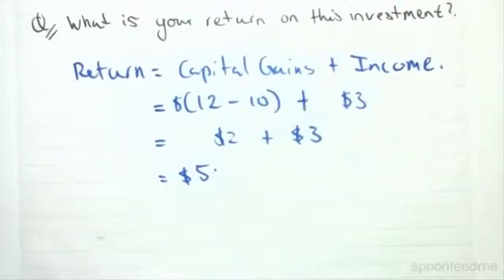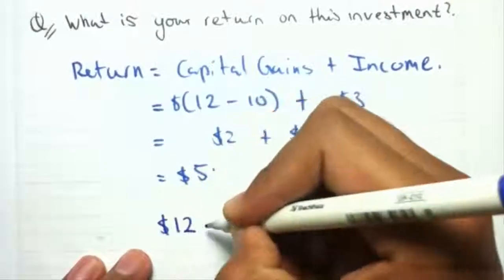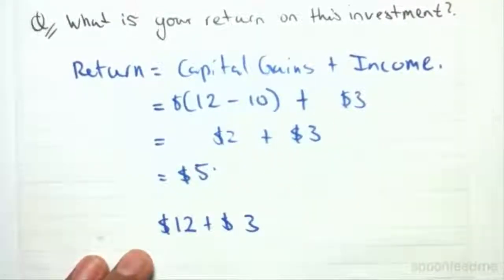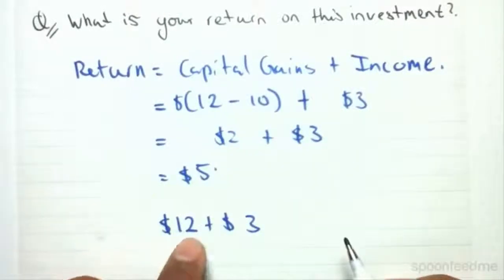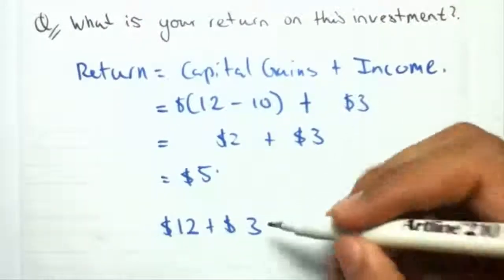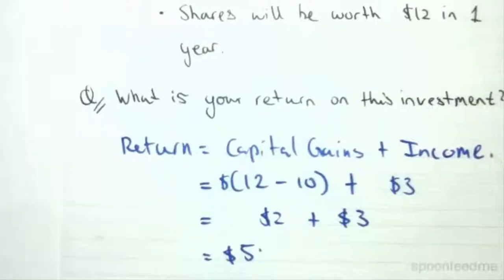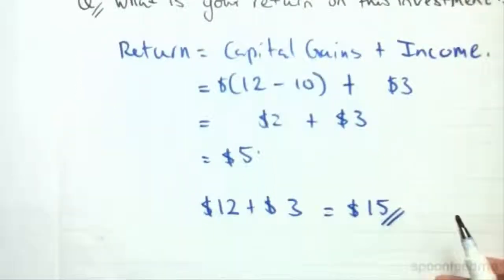But what will we have in total after we sell these shares? Well, it's pretty obvious that if we bought the shares for $10 and sell them for $12, sure our return is $5, but we'll actually be getting $12 plus $3. Including this $10 in our calculations, we only have to consider the income, and so we'll have $15 when we sell all of our shares in one year's time.